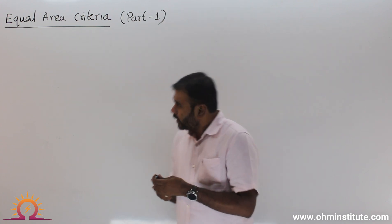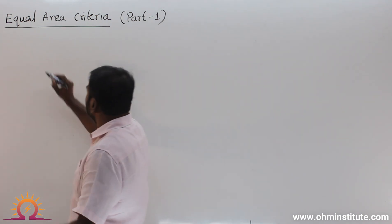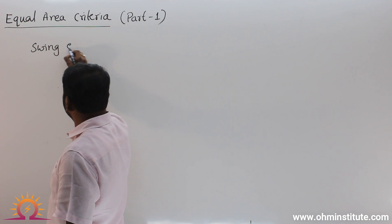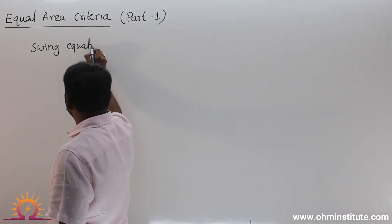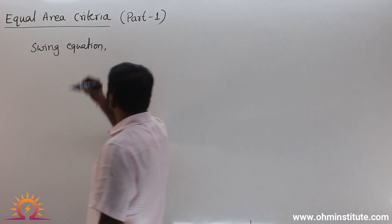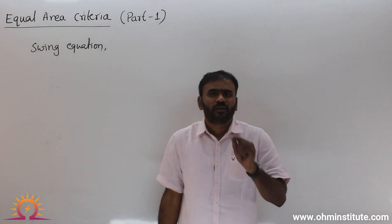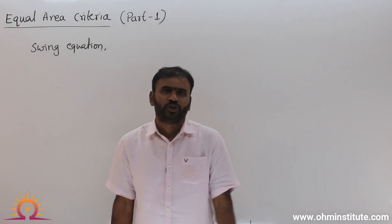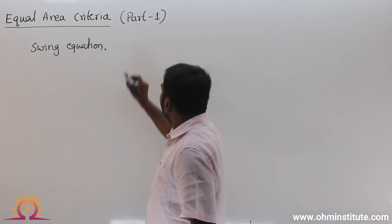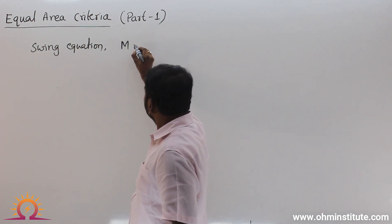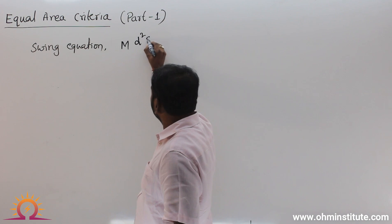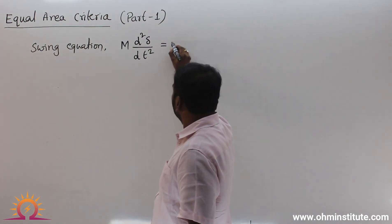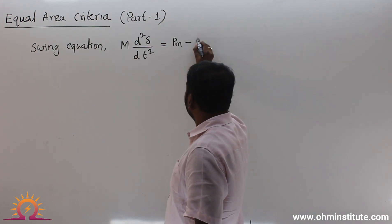In part 1, we will see the swing equation. I am not going to derive the swing equation here — I am going to explain directly from the equation. What is the swing equation of the synchronous machine? The swing equation explains the complete dynamics of the synchronous machine. It is written as: M d²δ/dt² = Pm − Pe.